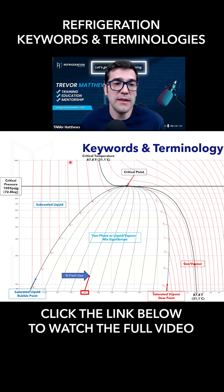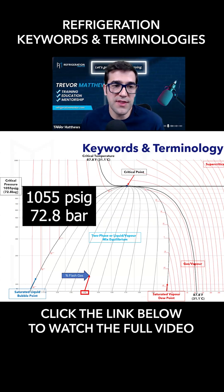We will be in this zone here, which is a compressed liquid. We'll talk about that in a minute. And the critical pressure is 1055 PSIG or 72.8 bar.